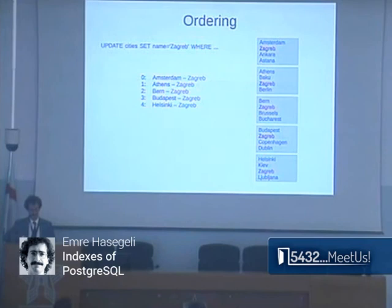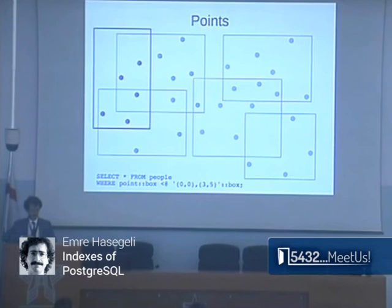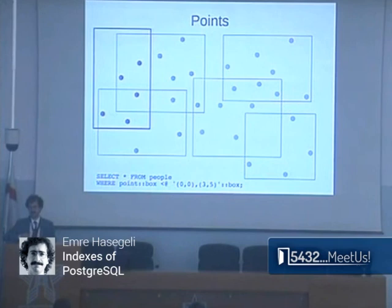BRIN is designed in an extensible way, so it's possible to provide indexing support for more complicated data types using this framework. For example, if you have a natural ordering of points in a table, you can index them with BRIN and store bounding boxes for every page range. It's also supported for range types.